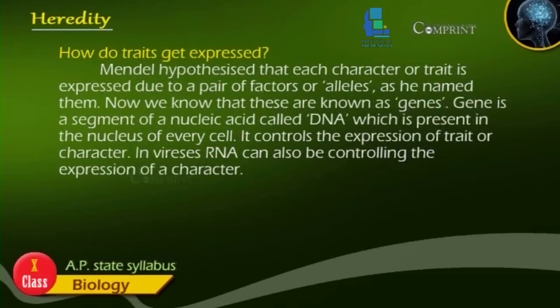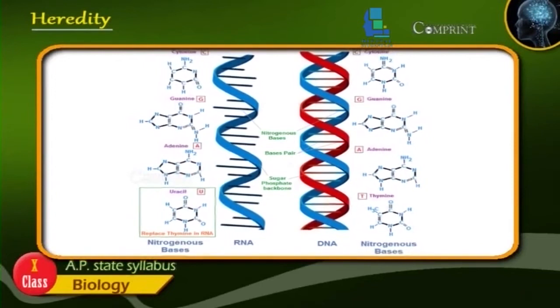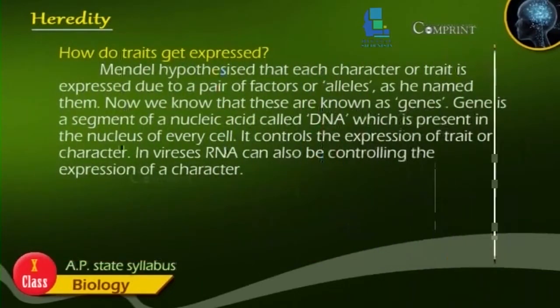The process in which traits are passed from one generation to another generation is called inheritance. How do traits get expressed? Mendel hypothesized that each character or trait is expressed due to a pair of factors or alleles as he named them. Now we know that these are known as genes. A gene is a segment of a nucleic acid called DNA, which is present in the nucleus of every cell. It controls the expression of a trait or character. In viruses, RNA can also control the expression of a character.